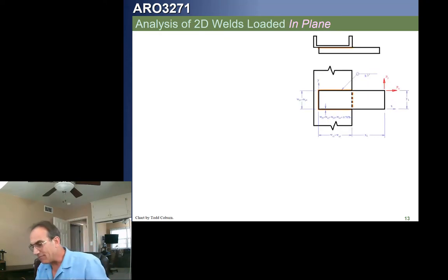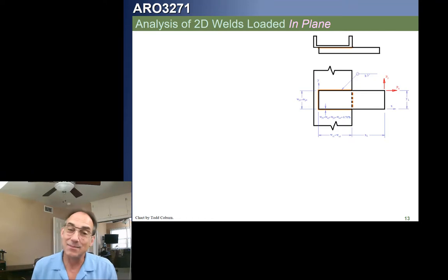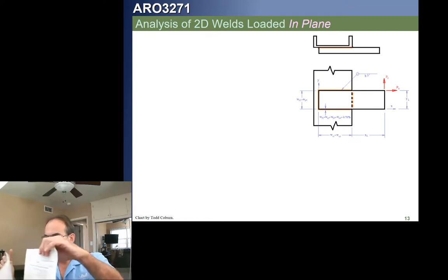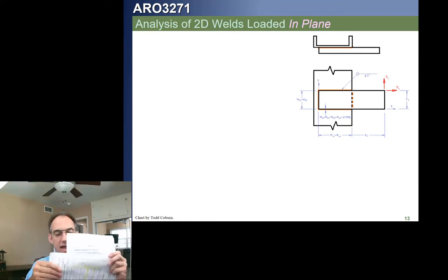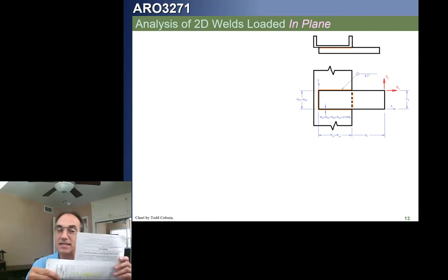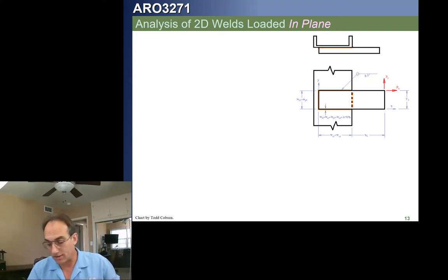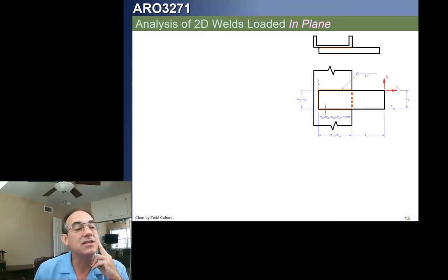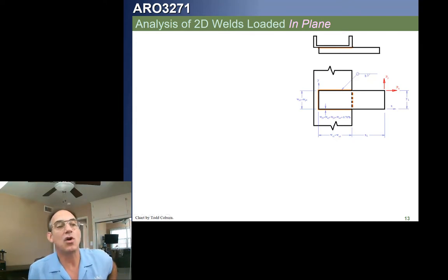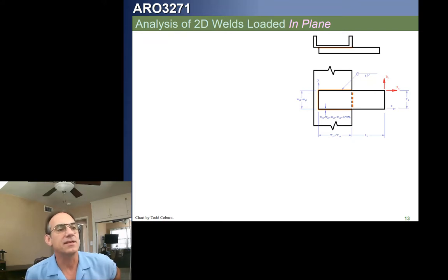The next important concept is identifying whether welds are loaded in-plane or out-of-plane. If all stresses occur in the plane of the weld pattern — like two bars attached in the same plane — that's an in-plane weld. If stresses pry the joint open, pulling perpendicular to the weld plane, that's an out-of-plane weld.